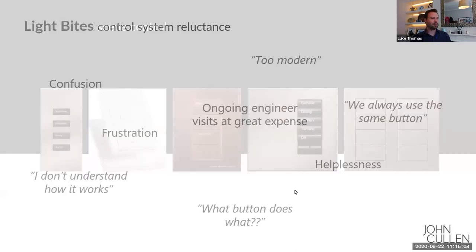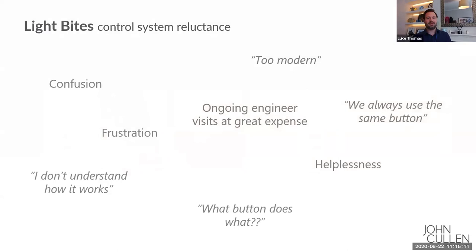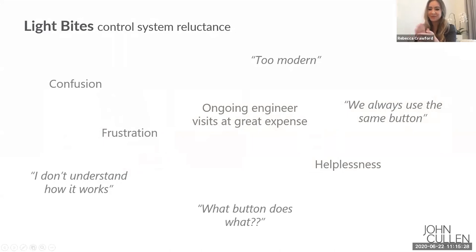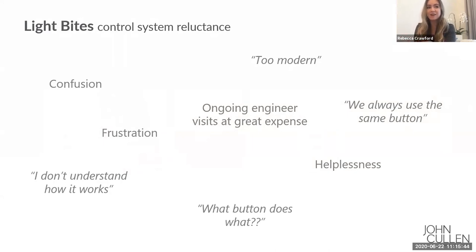In the UK there's still some resistance to control systems, whereas in the Middle East there's much more openness and they tend to be used on pretty much every project — 100% of our projects, in fact. There is a level of clients who've had control systems in the past, spent a lot of money on them, and never really utilized them effectively. As lighting consultants, we commission the scheme at the end and program everything for the scenes, but clients can develop a fear of reusing these systems, which is part of why they may not want a control system again.